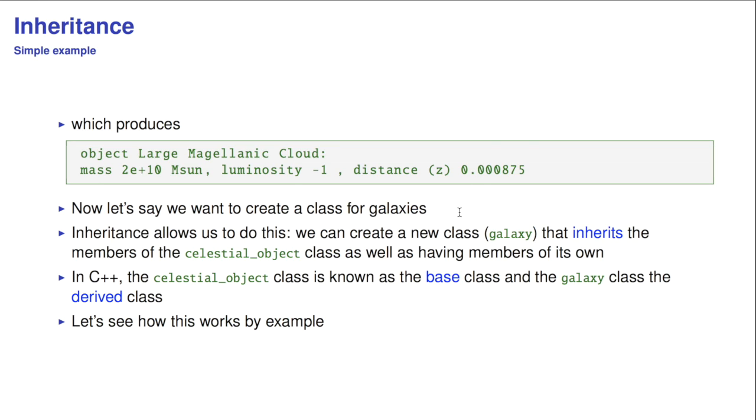Now let's say we want to create a class for galaxies. And a galaxy is just an example of an object in the sky. So inheritance is the right way to go. We can create a new class called galaxy that inherits the members of celestial object as well as having members of its own. For example, in this case, the Hubble type. In C++, the celestial class is actually known as the base class. And the galaxy class is the derived class.